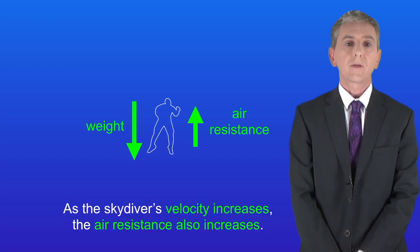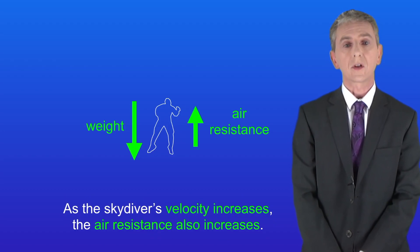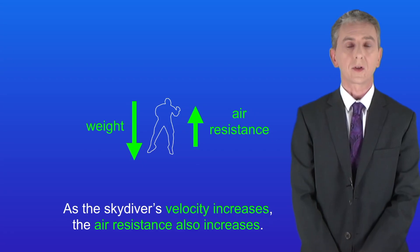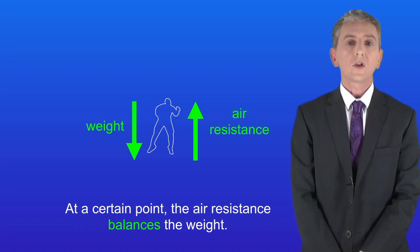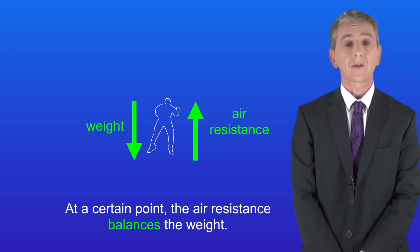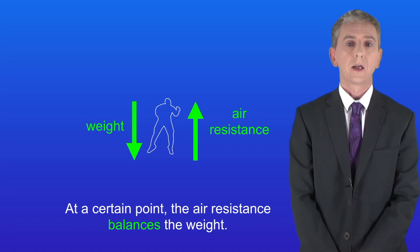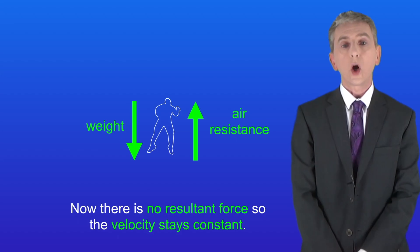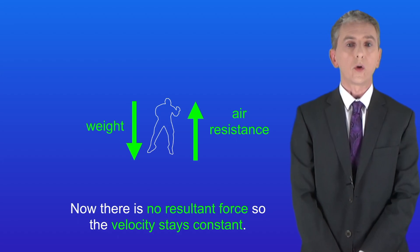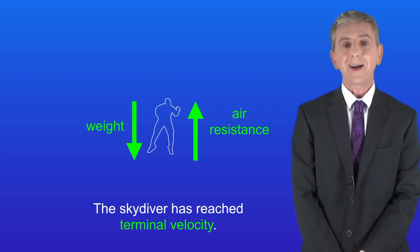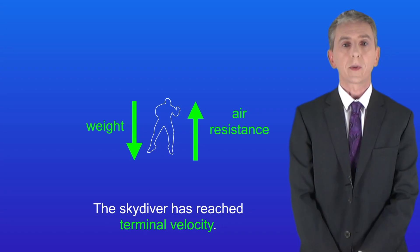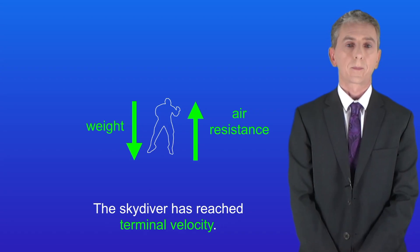As the skydiver's velocity increases, the air resistance also increases. At a certain point the air resistance balances the weight. Now there's no resultant force so the velocity stays constant — the skydiver has reached terminal velocity.